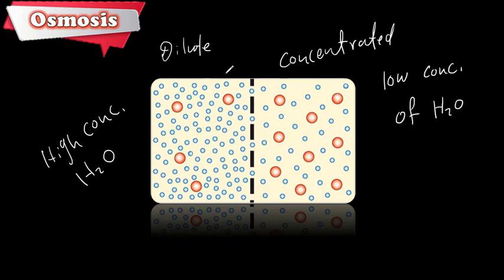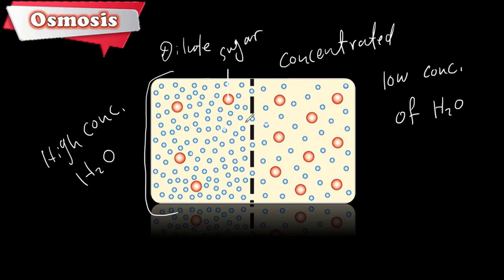If you look at the dilute solution side, you can see how much water it has — so much water and less sugar. The concentrated solution has more sugar and less water. So the water will diffuse from the dilute side to the concentrated side through a partially permeable membrane, which allows only water and does not allow sugar to pass.